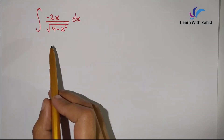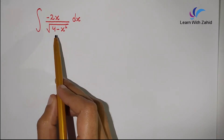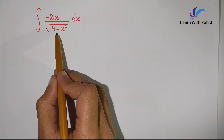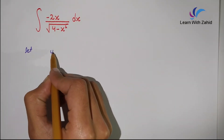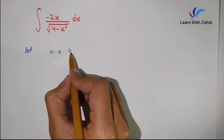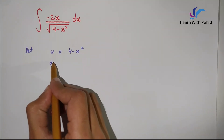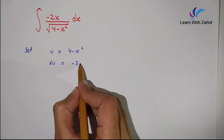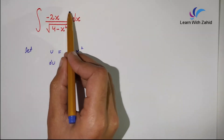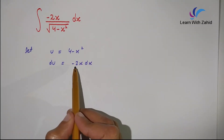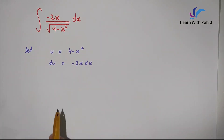We have to integrate the given function: minus 2x over square root of (4 minus x squared). For that, let us suppose that the term inside the square root, that is 4 minus x squared, equals u. So u equals 4 minus x squared. Differentiating both sides we get du equals minus 2x dx. We can see that we have minus 2x dx in the integral, so we put minus 2x dx equals du and 4 minus x squared equals u, and the given question becomes the integral of du over square root of u.